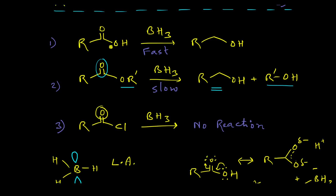In summary: carboxylic acids undergo faster reduction with borane as the reducing agent; esters undergo reduction but it is very slow; and carboxylic acid chlorides show no reaction with borane — no reduction product is obtained. This is the reason behind the differing reactivity. Thank you for watching this video.